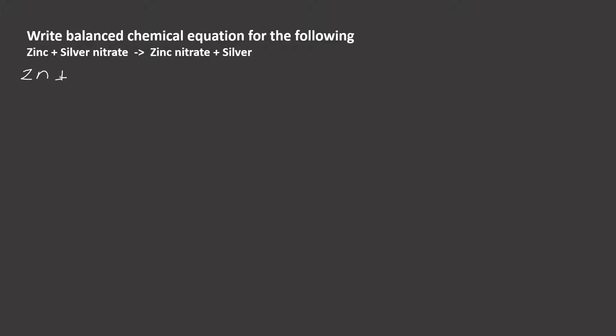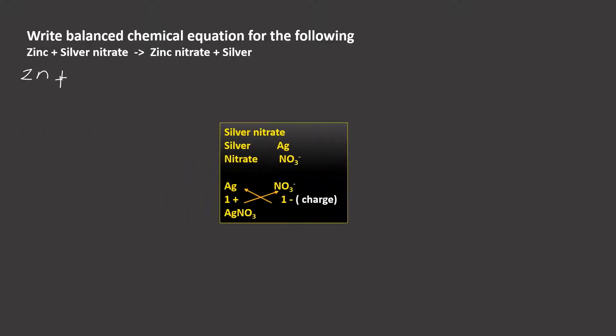For silver nitrate, it is a compound. See how that formula of silver nitrate is found here. You can see silver and nitrate ions are attached together. When the charges are criss-crossed, we get silver nitrate. So let us write that formula of silver nitrate AgNO3.